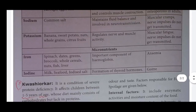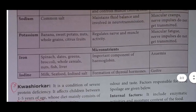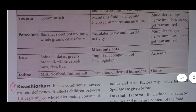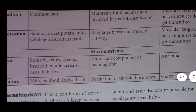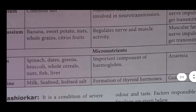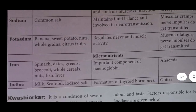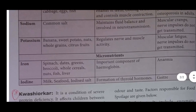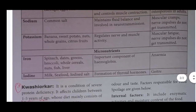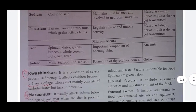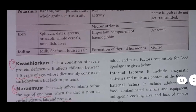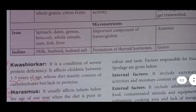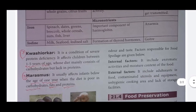Micronutrients - Iron: sources include dates, green vegetables, broccoli, whole cereals, nuts, fish, liver. Function: important component of hemoglobin. Deficiency disorder: anemia. Iodine: sources include milk, seafood, iodized salt. Function: formation of thyroid hormone. Deficiency disorder: goiter.